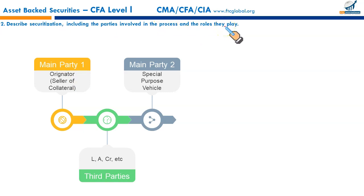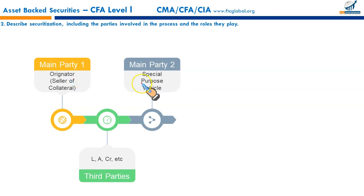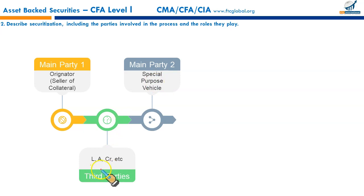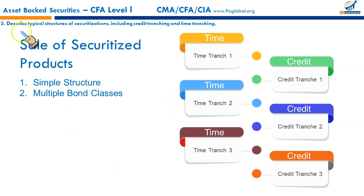There are two main parties in the securitization process. The first is the originator — the seller of the collateral — who originally owns the pools of assets such as receivables, mortgages, and auto loans, and sells them to the issuer. The second is the special purpose vehicle or entity, which creates and sells the asset-backed securities to investors. Third parties include lawyers, attorneys, credit rating agencies, underwriters, and guarantors.